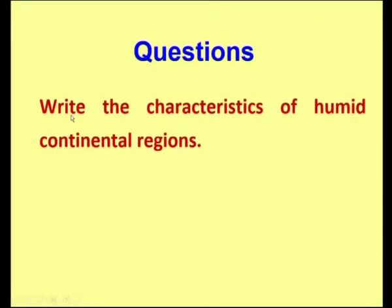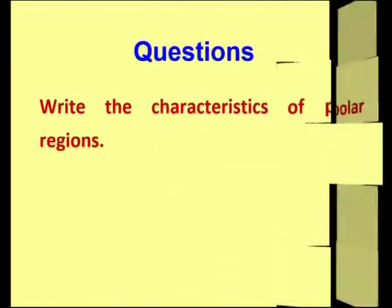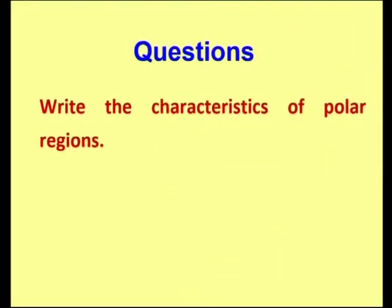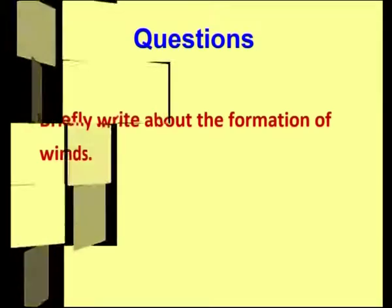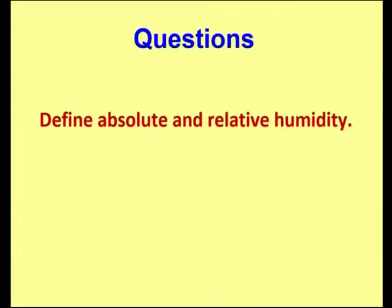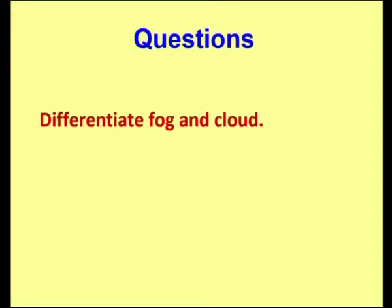Now we will have some questions. First, write the characteristics of the humid continental regions. Second, write the characteristics of the polar regions. Third, briefly write about the formation of winds. Fourth, define absolute and relative humidity. And the last one, differentiate fog and cloud. Today we have discussed all the climate zones, the secondary climate zones, the formation of wind, the precipitation, and the formation of rain and fog. With that, we are concluding this session. Thank you.